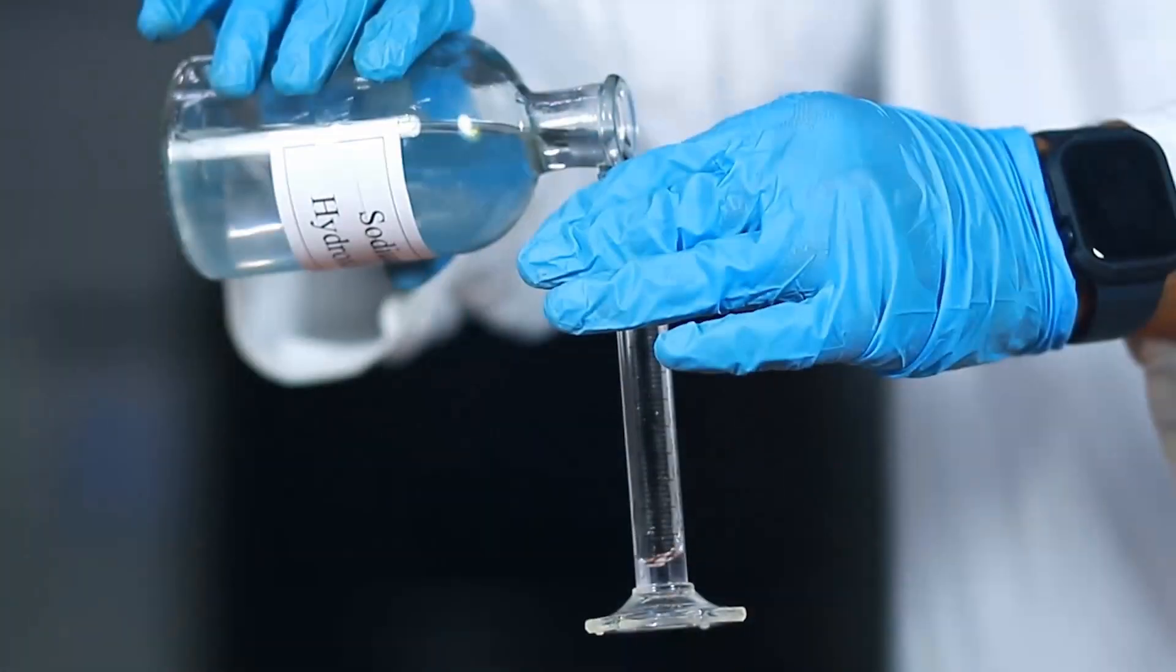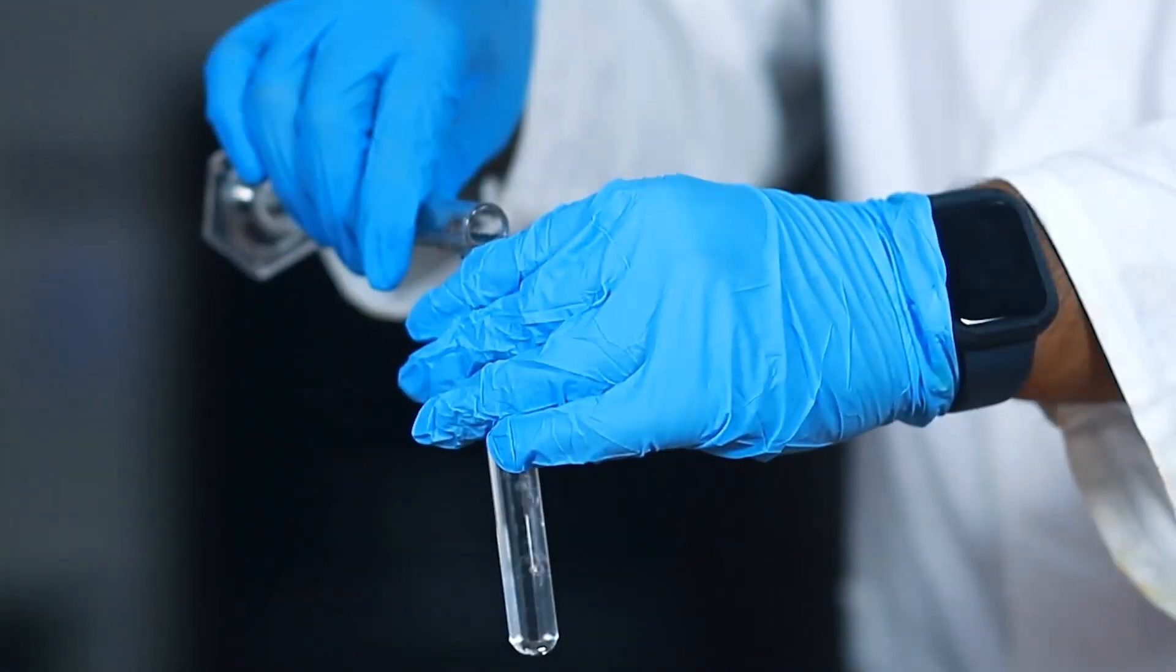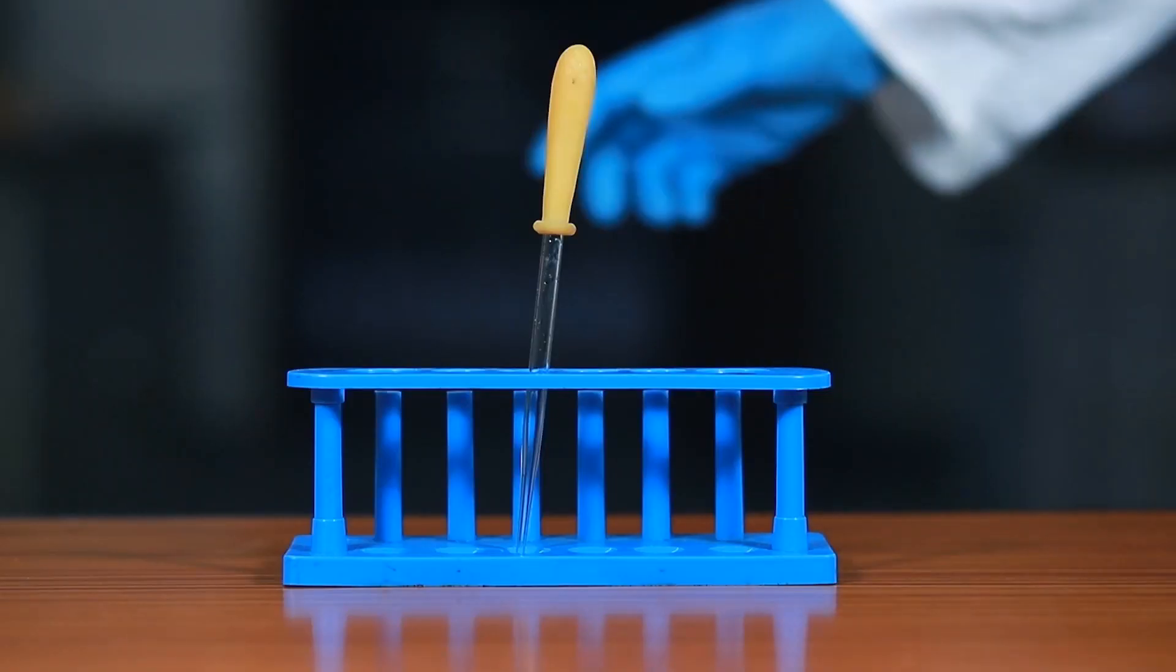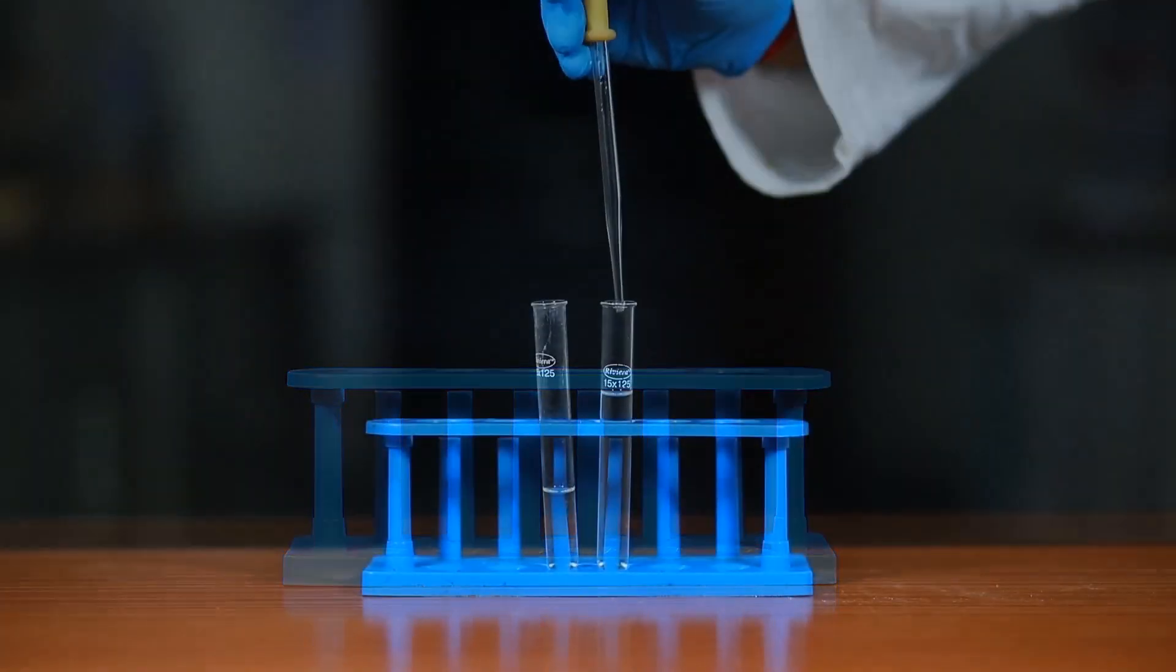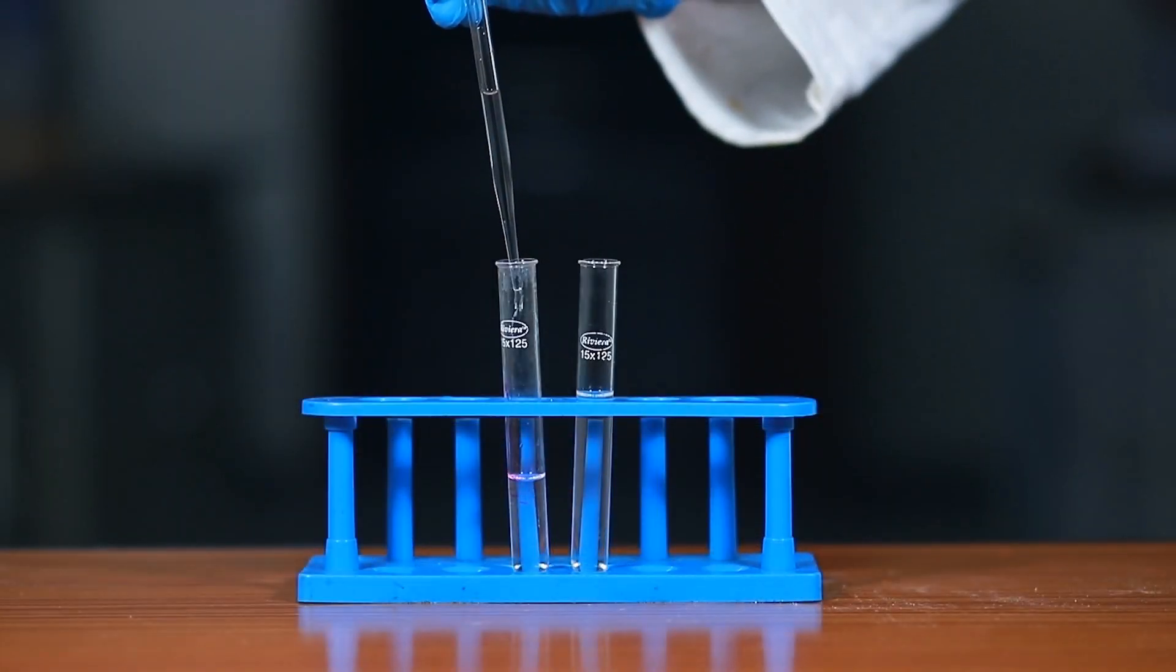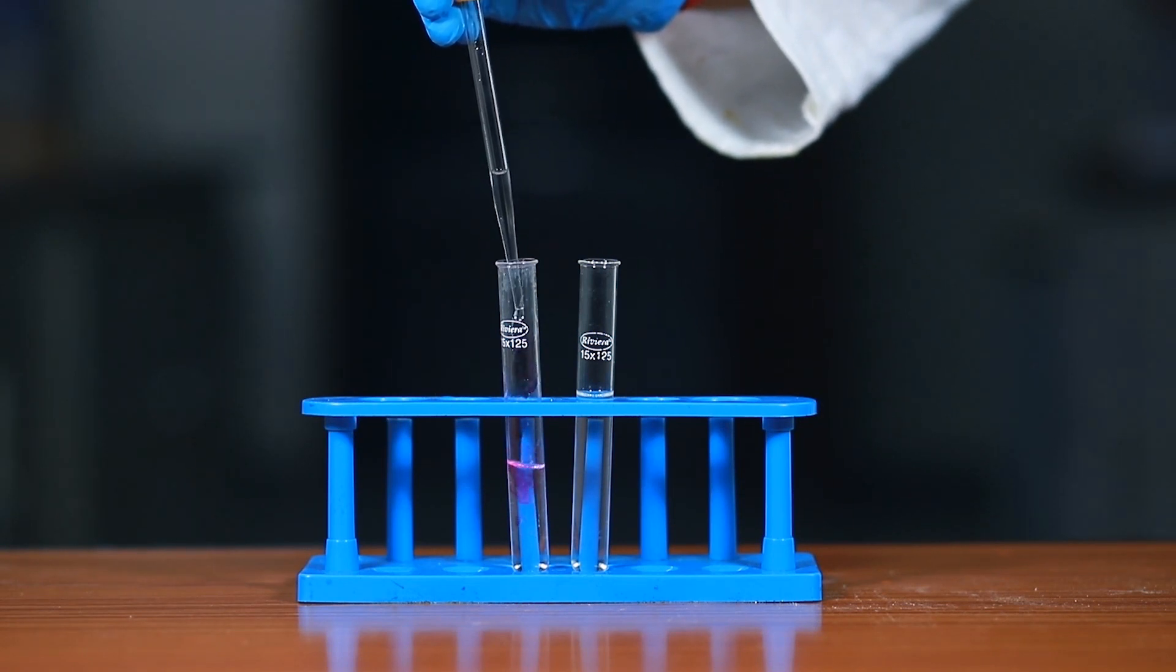Now, take about 10 ml of dilute sodium hydroxide solution in another test tube. Take out sodium hydroxide solution with the help of a dropper and start adding the solution drop-wise into the test tube containing hydrochloric acid till a change in color is observed.